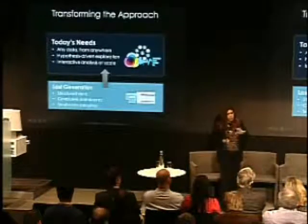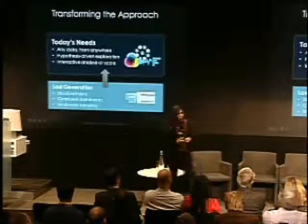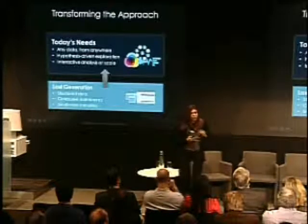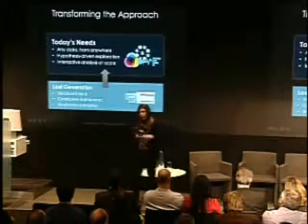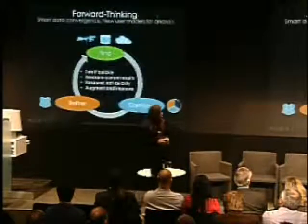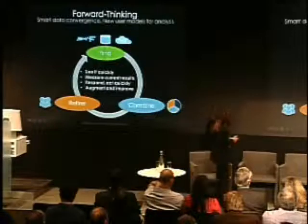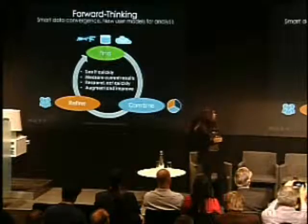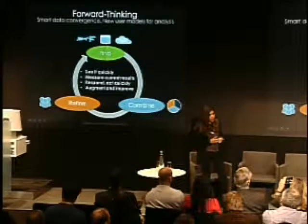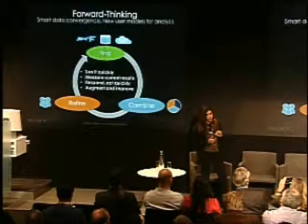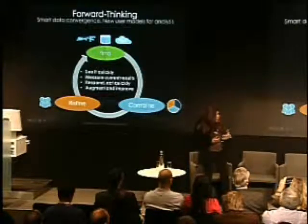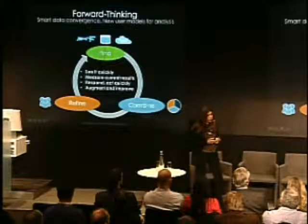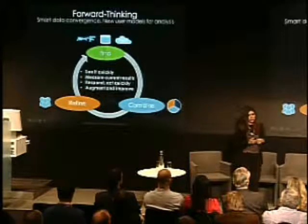This whole notion of changing the model to more of a top-down approach — where you can actually access data easily, drive a hypothesis-driven exploration, and interact with the data until you reach an insight — is where a lot of the new needs are as it relates to big data analysis and one of the fundamental things that ClearStory focuses on. In terms of forward thinking, the need is to enable smart data convergence as you bring sources together, bringing intelligence to the sources themselves, especially external sources, and introducing a new model for iterative discovery, data exploration, and fast analysis.